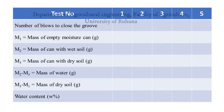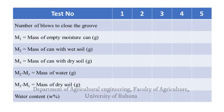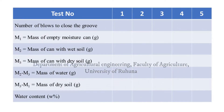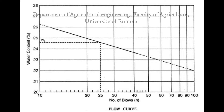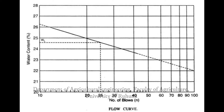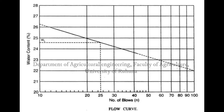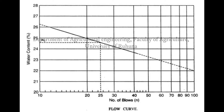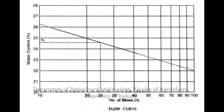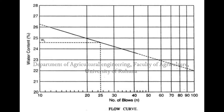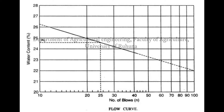Record the number of blows required to close the groove at different water contents. The results of the liquid limit determination are plotted on a semi-log graph, with water content on the arithmetic scale versus number of blows on the logarithmic scale. Finally, the liquid limit — which is the water content at which the groove cut into the soil is closed by 25 blows — can be found using the graph.